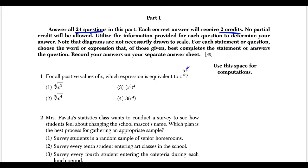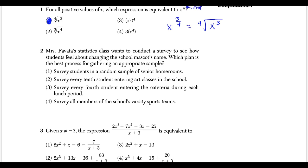Anytime you have a rational exponent or an exponent in the form of a fraction, think 'power over root' — the number on top tells you the power, and the number on bottom tells you the root. So x to the 3/4 can be rewritten as the fourth root of x to the 3rd power. Scanning the answer choices, this matches choice 1.